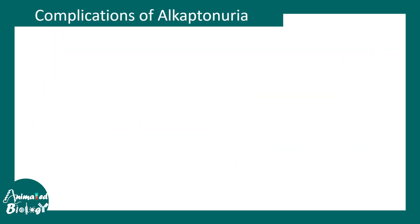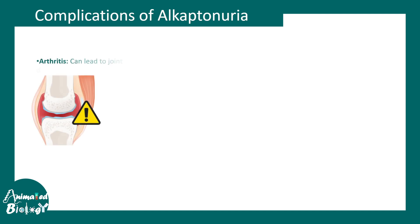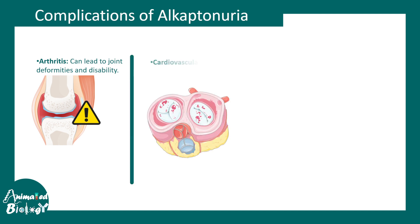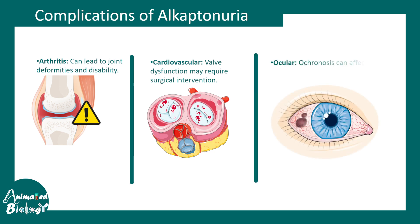The complications of alkaptonuria involve arthritis, which leads to joint pain, deformities, and eventually movement difficulties or disabilities. Cardiovascular valve dysfunction may require surgical intervention, and ochronosis in the eye — especially in the sclera or cornea — can lead to eye complications and visual problems.